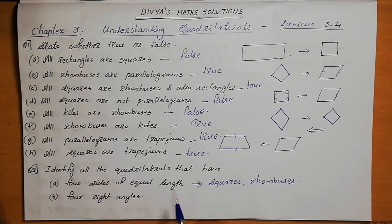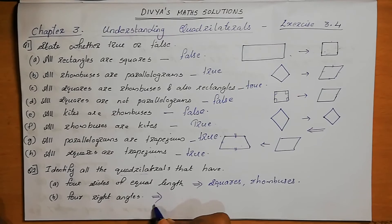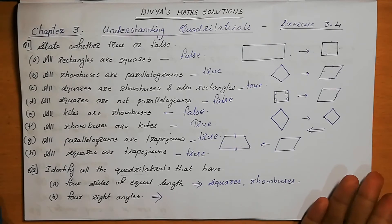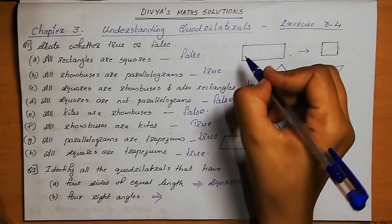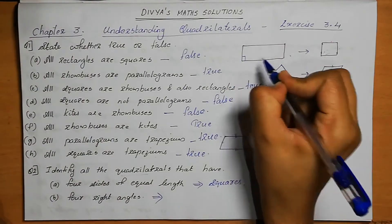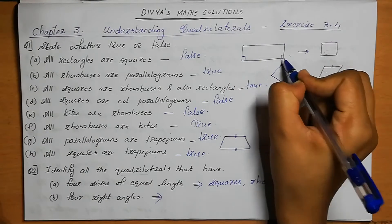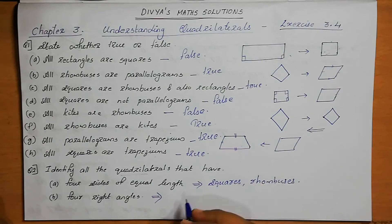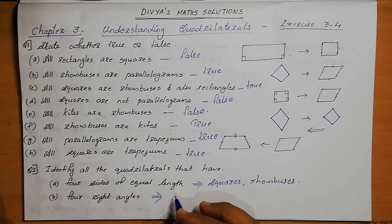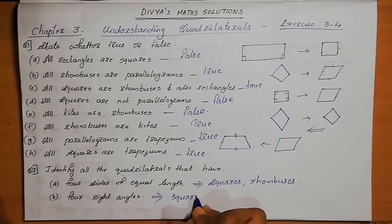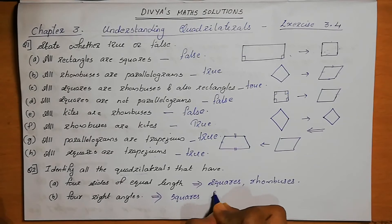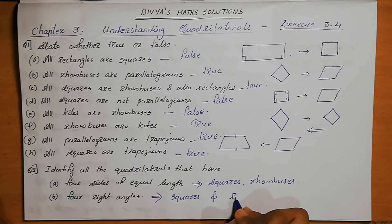Four right angles — in which figures are there four right angles? In a square, four right angles are there. In rectangles, all angles are 90 degrees as well. So the examples for four right angles are squares and rectangles.